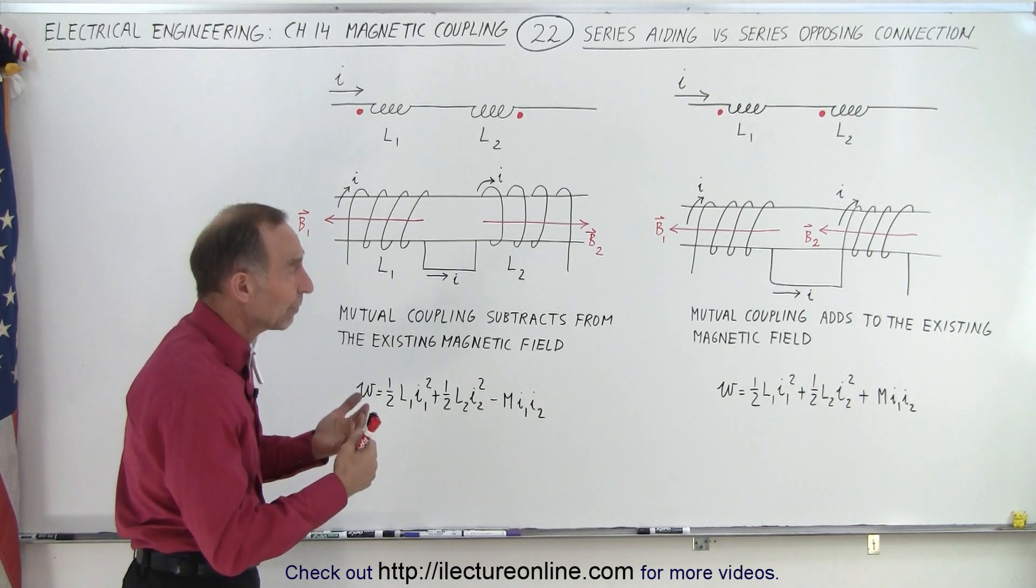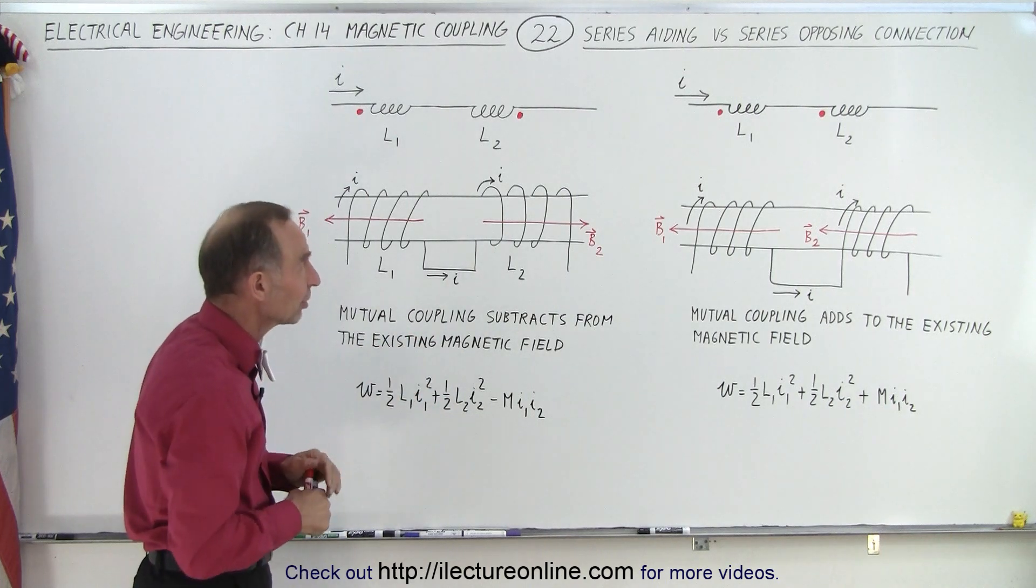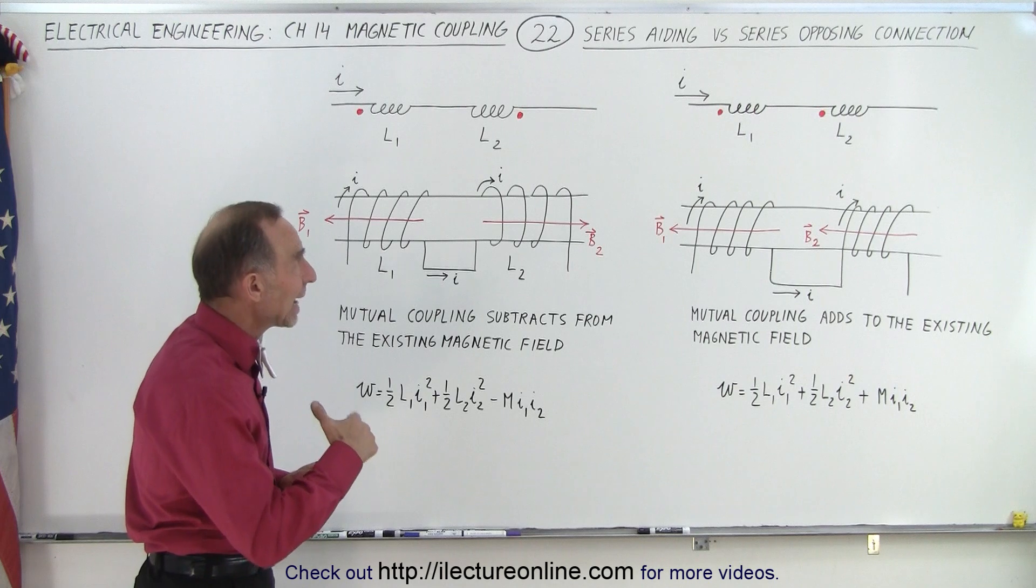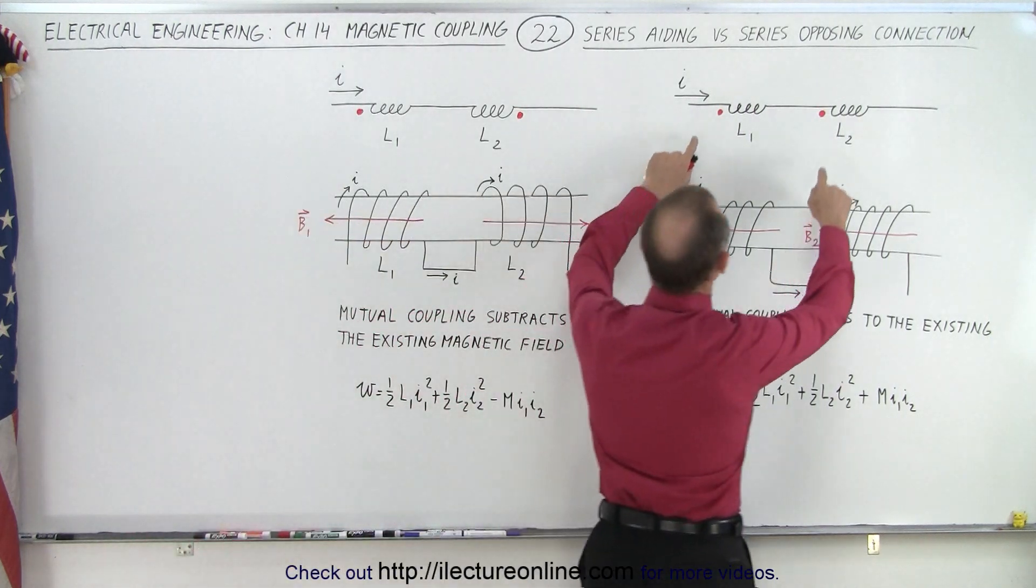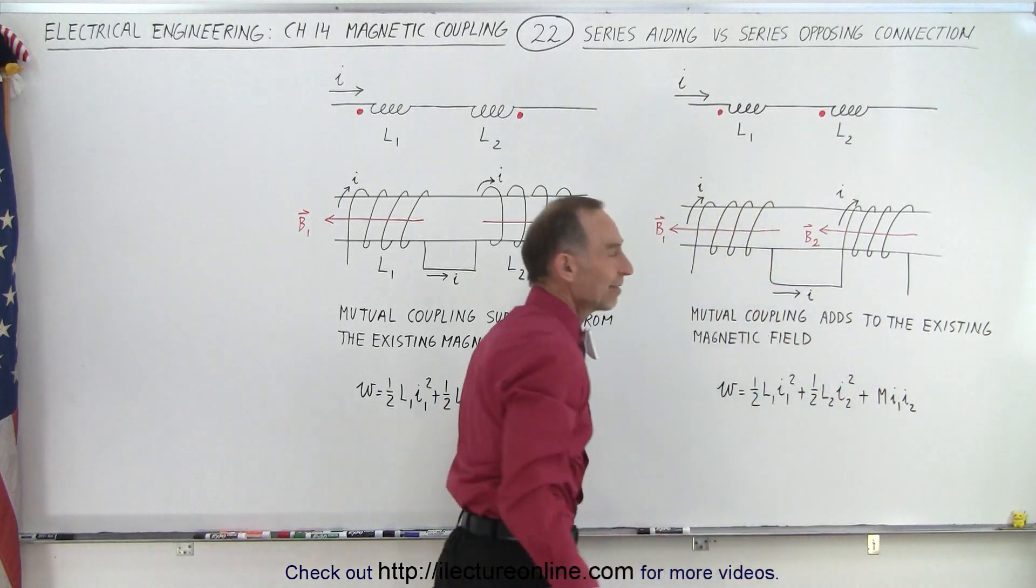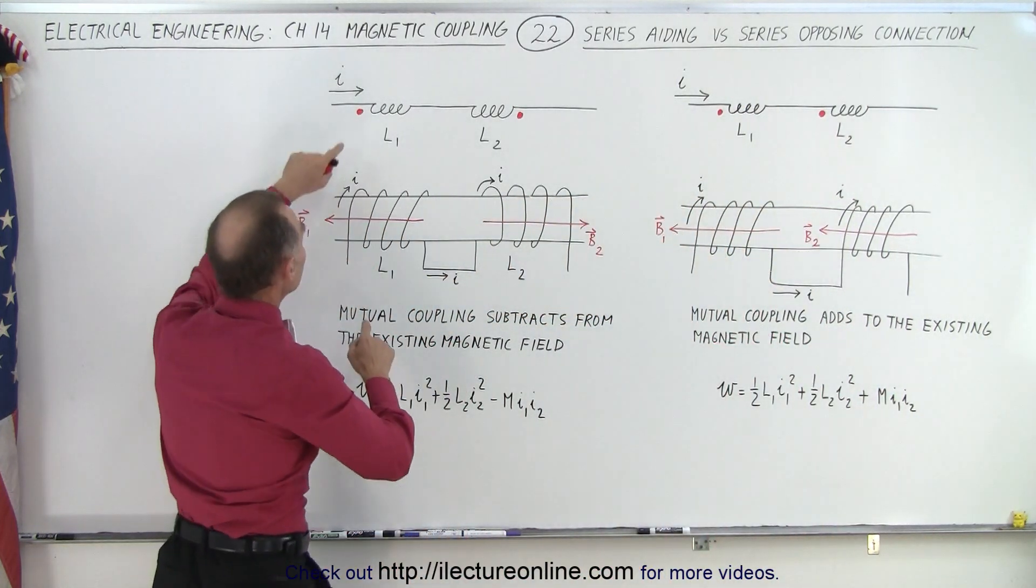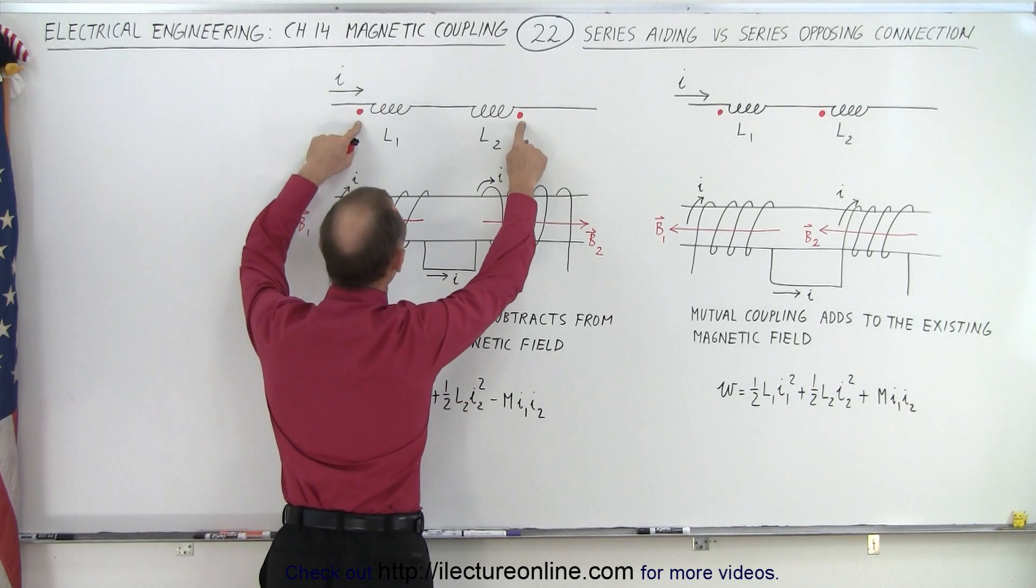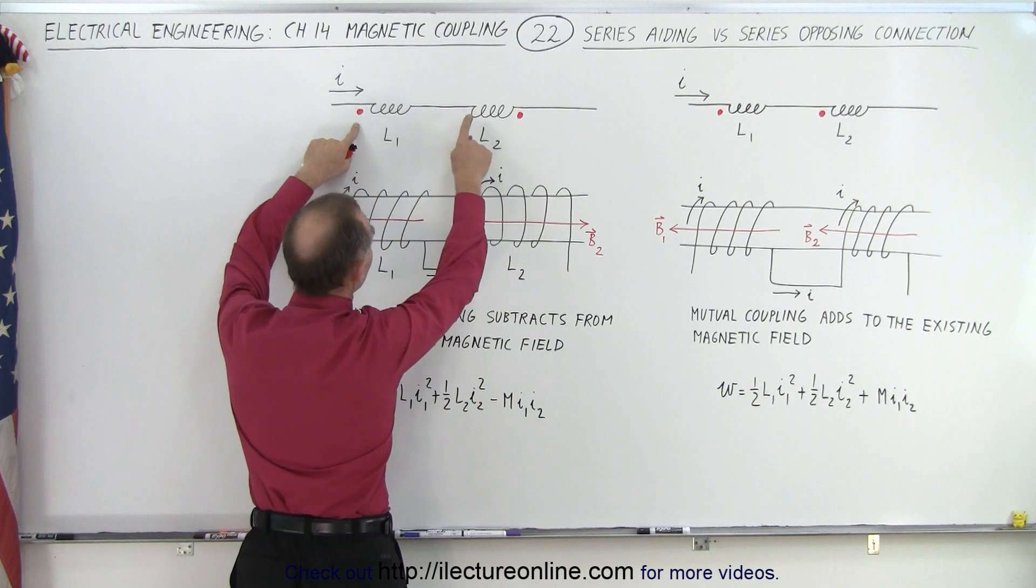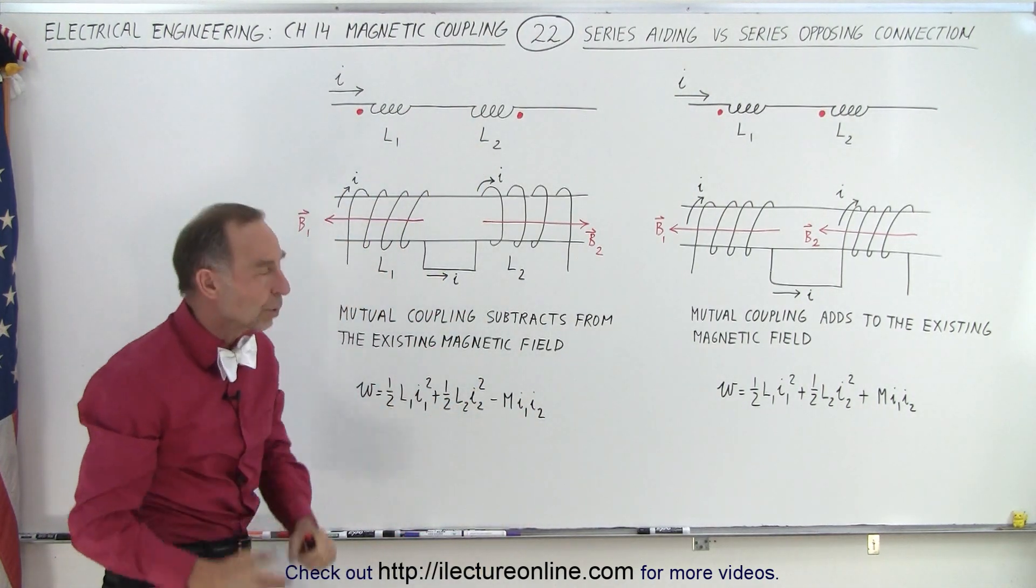A series aiding, first of all, series means that you put the two inductors in series, one after the other, on the same line. And when you have them aiding, that means that the dots will be on the same side of the inductor and the current will enter on the dot side for both inductors. Series opposing connection means that you put the dots on the other side so that in this case the current will enter on the dot side and here the current will enter on the opposite side. But what does it look like in real life?